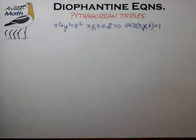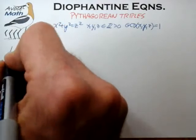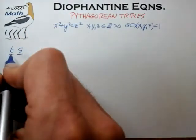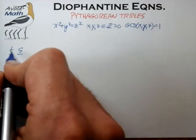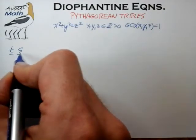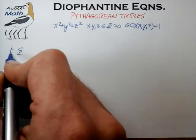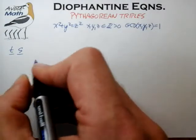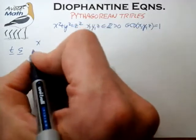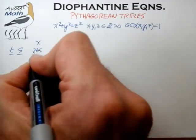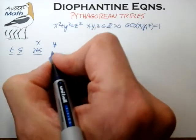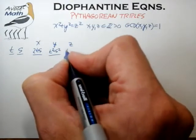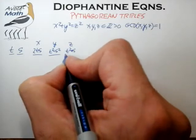What we found is a generator function which is quite convenient: for any pair of positive integers t and s that are of opposite parity — one is even, the other is odd — and are both relatively prime, we can generate x as 2ts, y as t squared minus s squared, and z as t squared plus s squared.